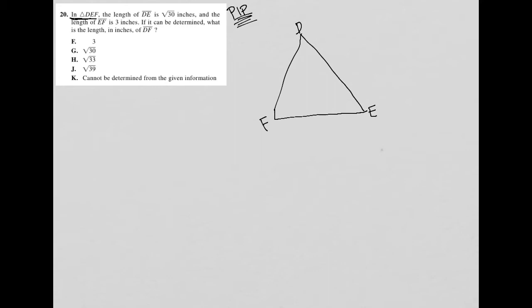It says the length of DE is square root 30 inches. I'm going to label this as square root 30. And the length of EF is 3 inches, so I'm going to label this as 3.